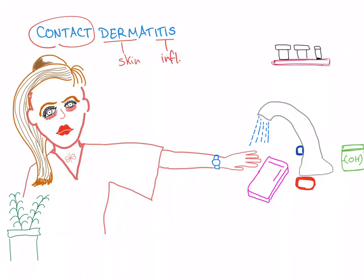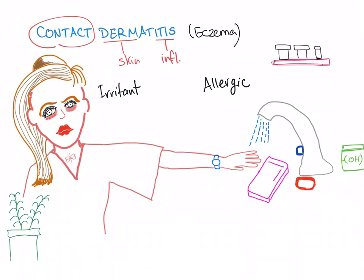It has two types. The first one is called irritant contact dermatitis. The second one is called allergic contact dermatitis. Contact dermatitis is sometimes called contact eczema, and therefore irritant contact dermatitis can be known as irritant eczema or allergic eczema — so the same thing.